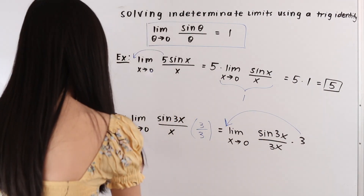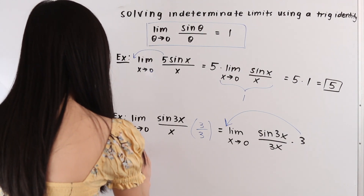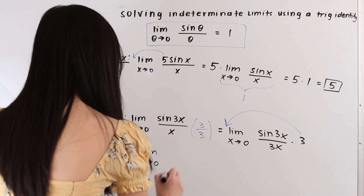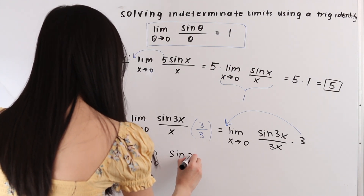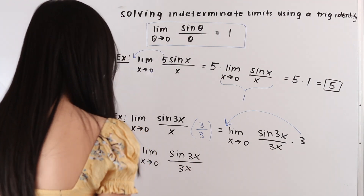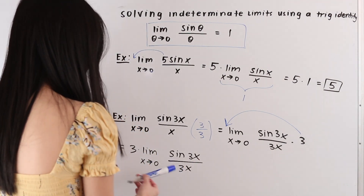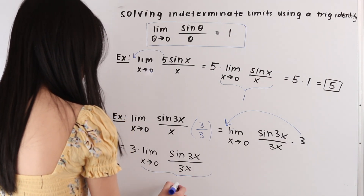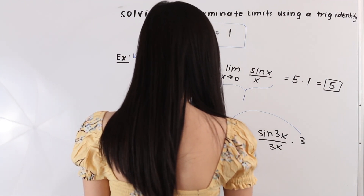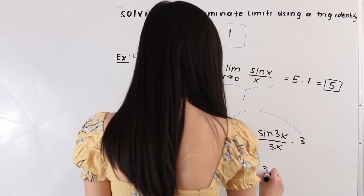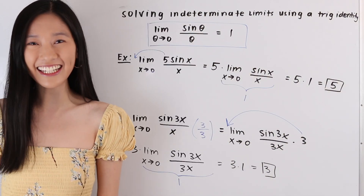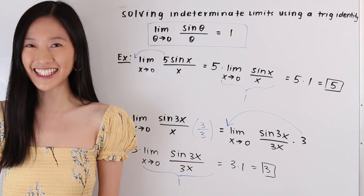This is equal to three times the limit as x approaches zero of sine of three x over three x. From our identity we can see that this is equal to one, and so we have three times one which is equal to three. And that is how you solve indeterminate limits using a trig identity. Thank you so much for watching and I'll see you next time!